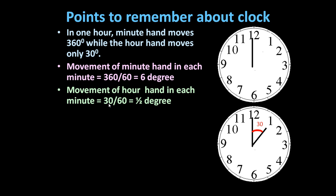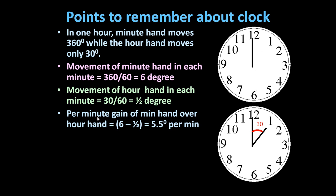So in each minute, it moves 30 upon 60, which is equal to half a degree. So in one minute, the minute hand moves 6 degrees and the hour hand moves half a degree. If we consider these two combined, because both of them are moving in the same direction...